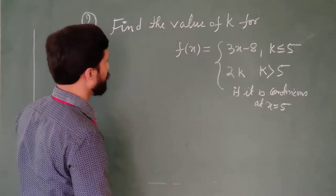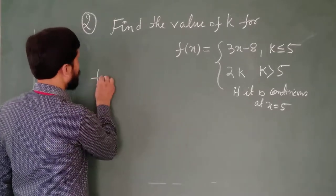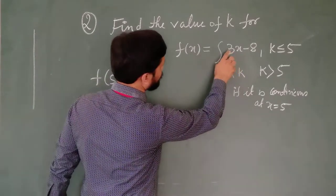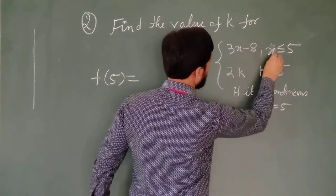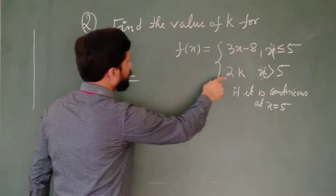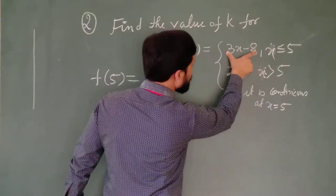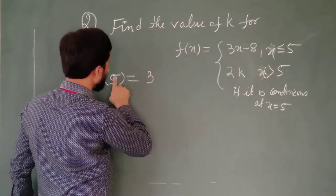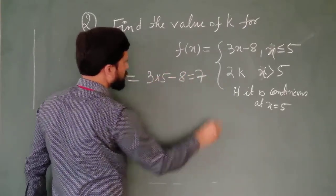As before, we will calculate the value of the function at the point 5. You should use x because the function is in terms of x. When x is equal to 5, we have to choose this expression. In this expression, in place of x we will write 5, and what we are getting is 7.